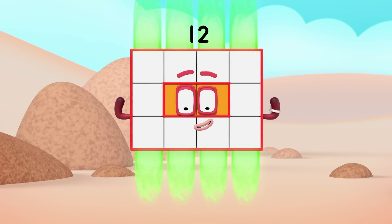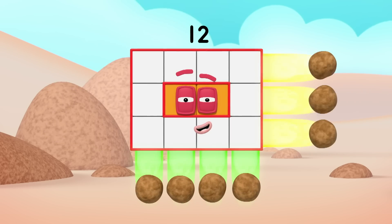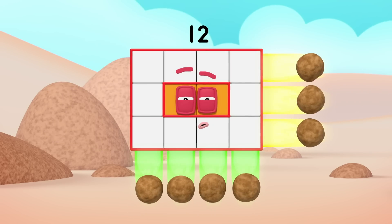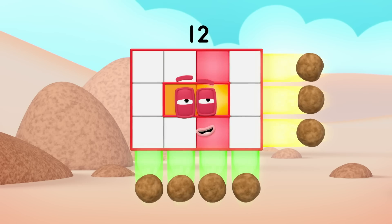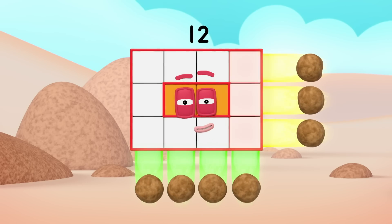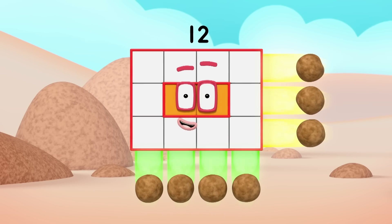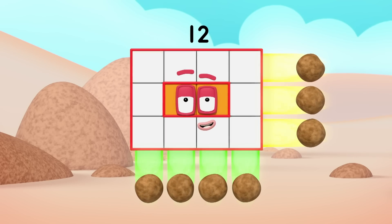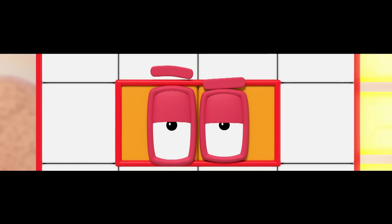Four by three! Four by three's my next array. Four lots of three, you could put it that way. And this rectangular display is about to show you how it's made. Break away!